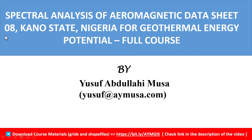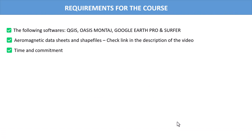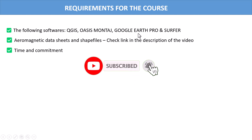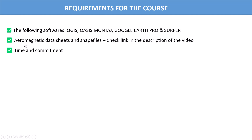This study area covers data sheet 08. The course materials can be downloaded through the link in the description of the video. Throughout this course, the following software will be required: QGIS any version, Oasis Montage version 6 and above, Google Earth Pro which is free, and Surfer from version 13 and above. In this course I'm using Surfer version 13, but any version can work.